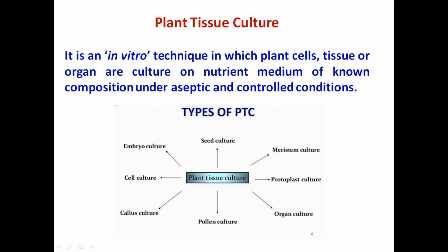Additional types of plant tissue culture include protoplast culture, organ culture, pollen or anther culture, callus culture, cell culture, and embryo culture.